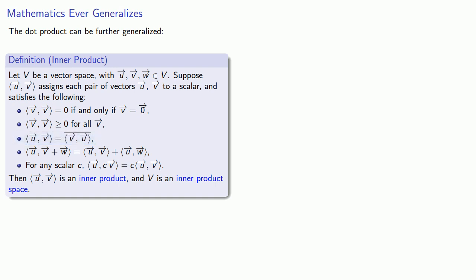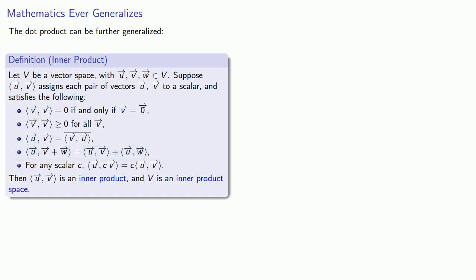Fourth, we want the inner product of u with the vector sum v plus w to be the sum of the inner product of u and v with the inner product of u and w. Finally, for any scalar c, the inner product of u and the scalar multiple cv is going to be c times the inner product of u and v.